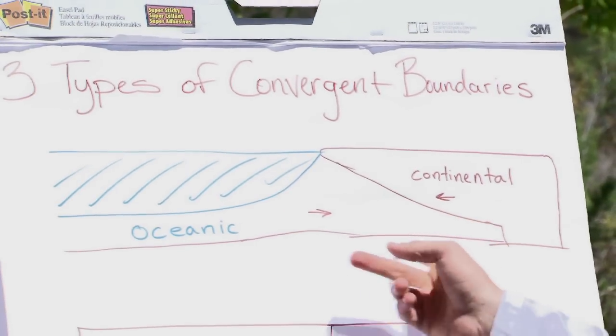My name is Ben Deeb. I'm a science teacher in Southern California with a background in environmental science and geology. In this video I'm going to talk about the three types of convergent boundaries.